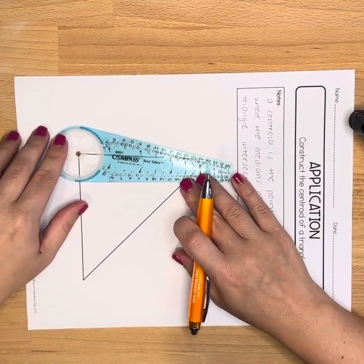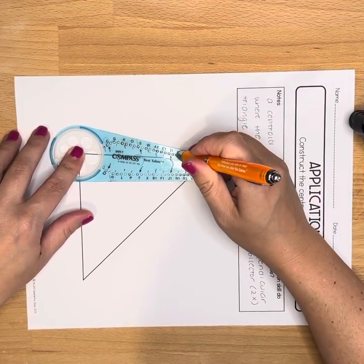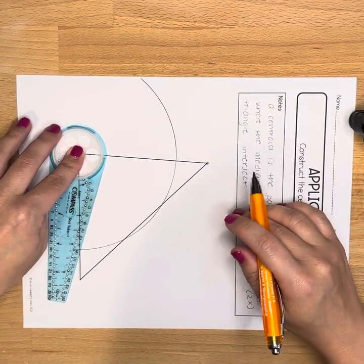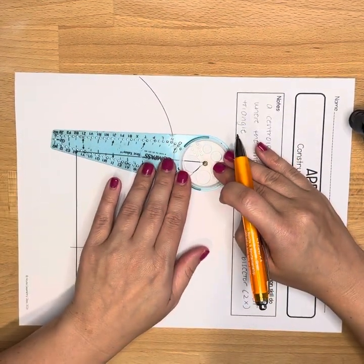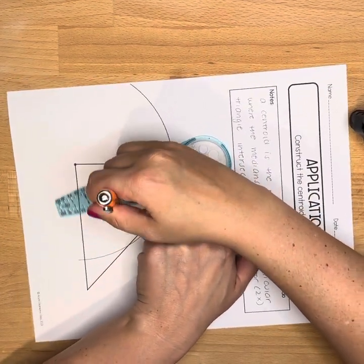First we're going to construct the perpendicular bisector of that line segment. That's where we make these two arcs of the same size and we find where they intersect one another and draw a line through those points of intersection.